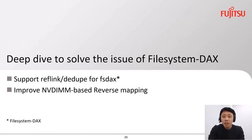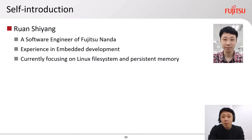It's my turn to talk about how to solve the issues of file system DAX. I will do it in two parts: first, how to support reflink and dedupe for file system DAX; second, how to improve the NVDIMM-based reverse mapping. My name is Ran Shiyang, a software engineer at Fujitsu. I used to work in embedded systems and currently I'm focusing on Linux file system and persistent memory.